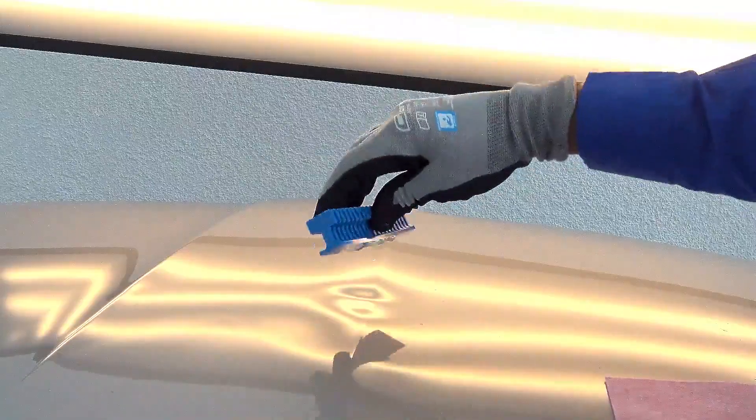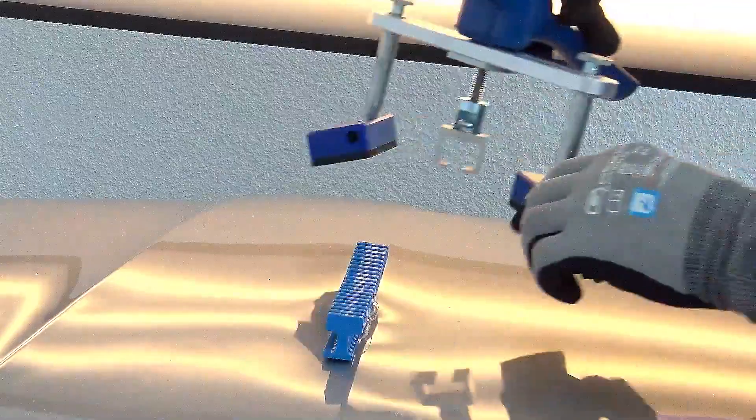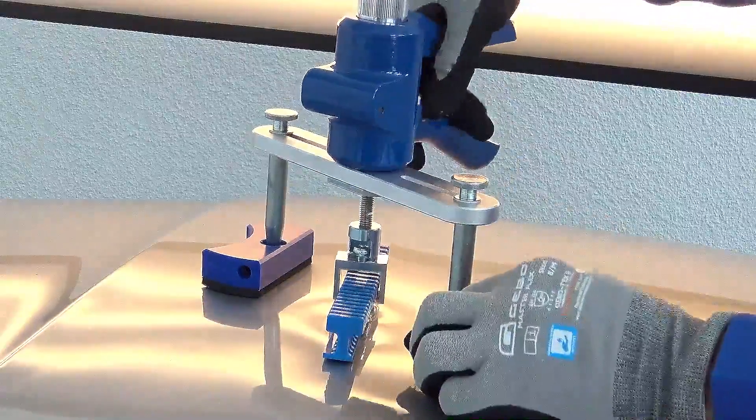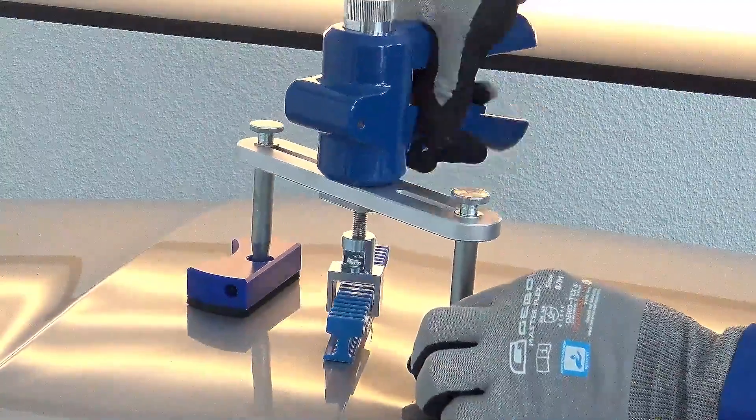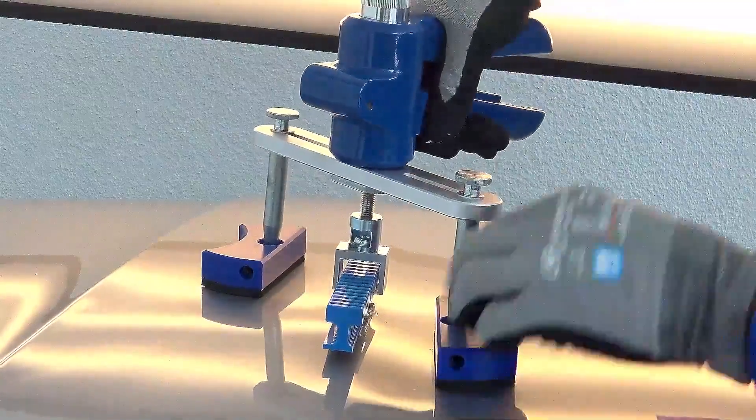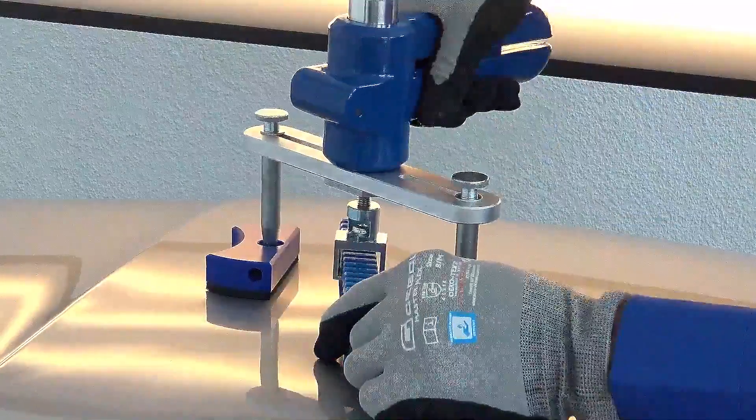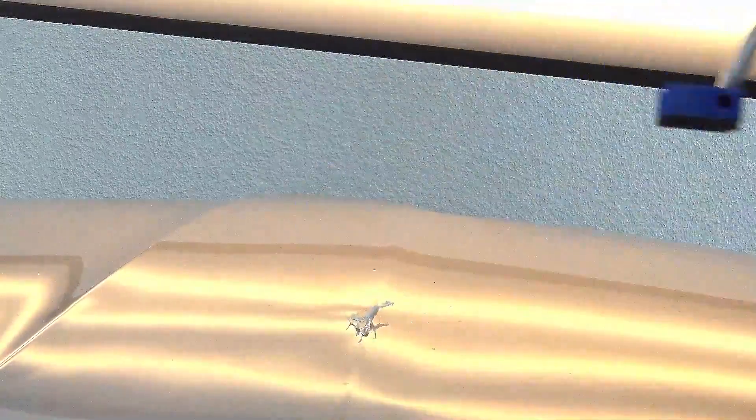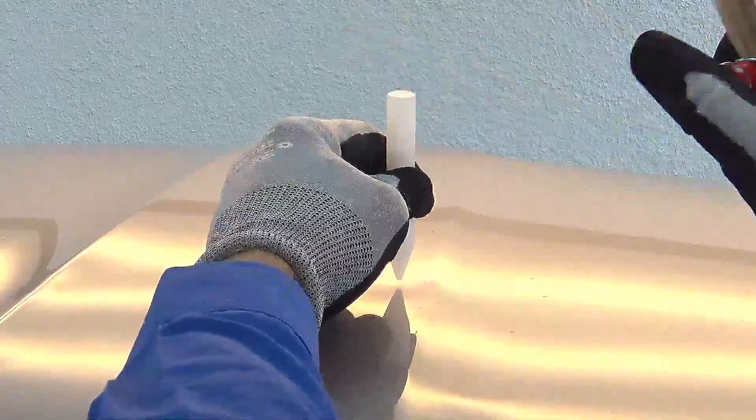Body lines and edges can be pulled up with the Speedline 16 which has an off-center pull. Again here pull and knockdown, or if needed, re-pull in leftover low areas.